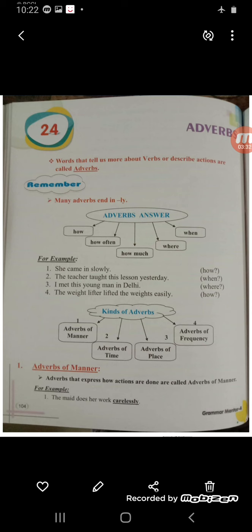The teacher taught this lesson yesterday — the verb here is 'taught.' Where did you meet him? I met the young man in Delhi. Where did you meet him? In Delhi. Now, the weight lifter lifted the weights easily. How did the weight lifter lift the weight? He lifted it easily — so the answer you are getting is 'easily.'